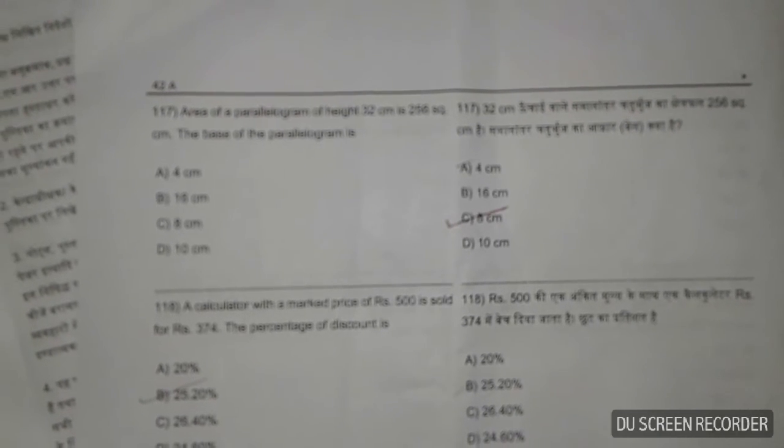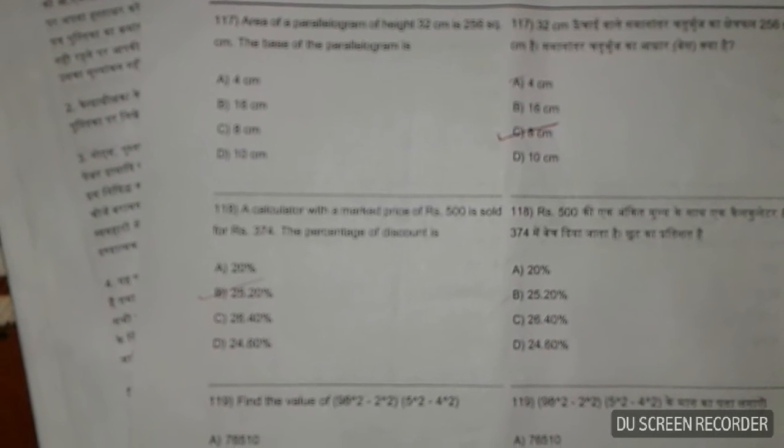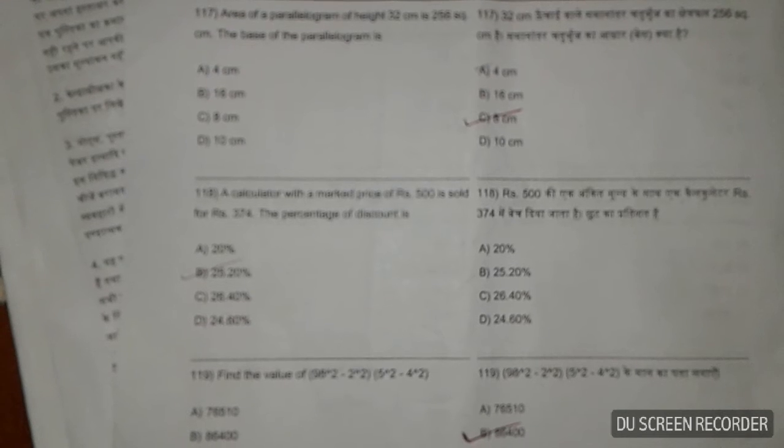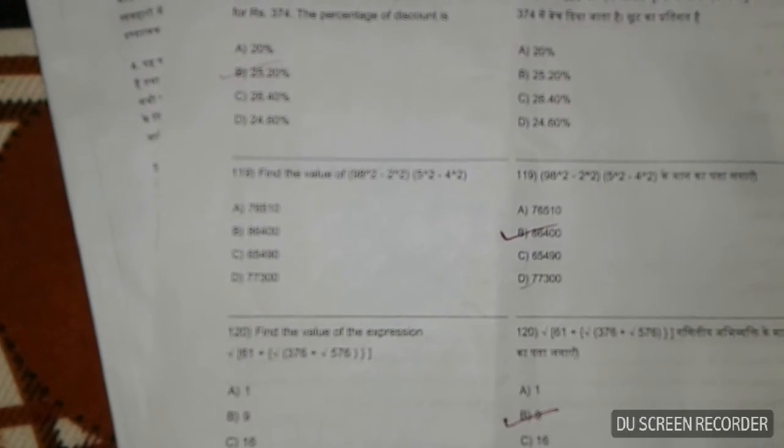A calculator with a marked price of 500 rupees is sold for 374 rupees. What is the percentage of discount?